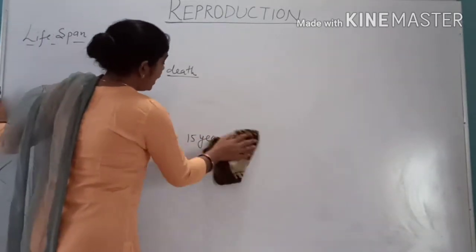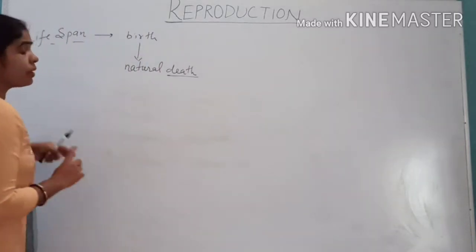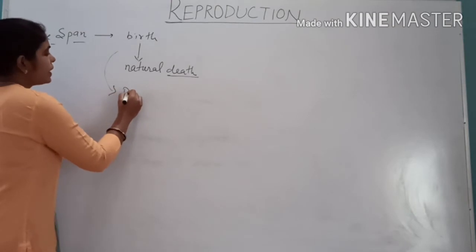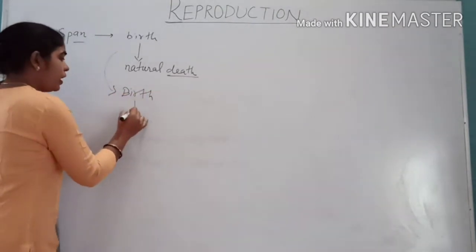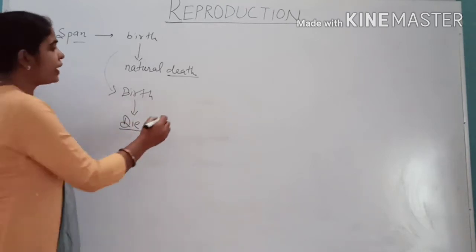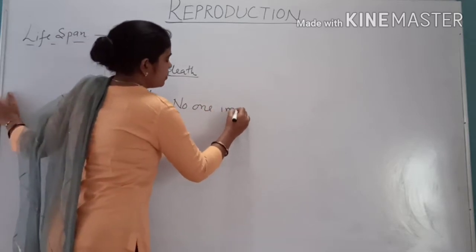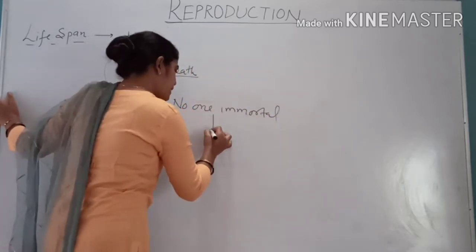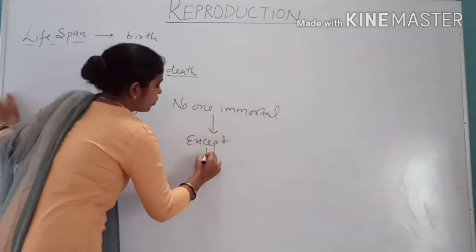Each and every organism which takes birth will die. All the organisms which are born will die one day — no one is immortal. Except unicellular organisms.